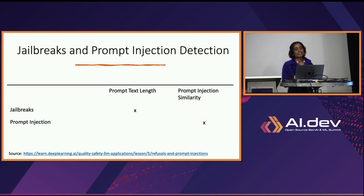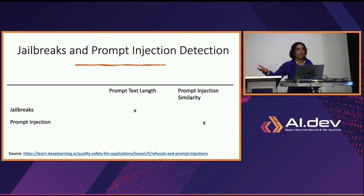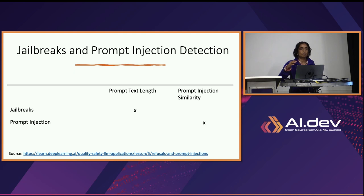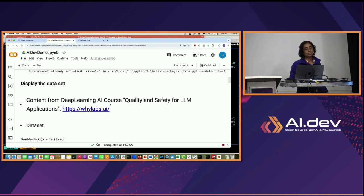For jailbreak and prompt injection detection: jailbreak is where the large language model would normally refuse 'how to steal a car,' but you craft an input and still get that information — breaking the guardrails. One way to detect this is with prompt text length. For prompt injection, you can look at similarities between the usual prompts. The sample prompted responses used here were from a deep learning course on quality and safety for large language models.